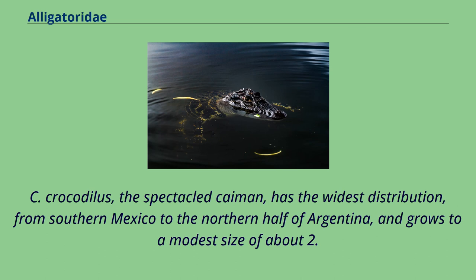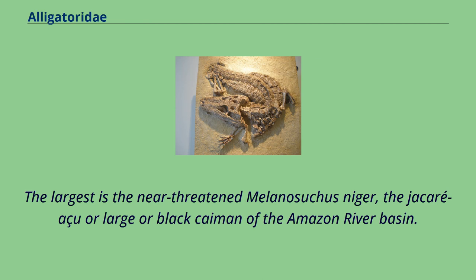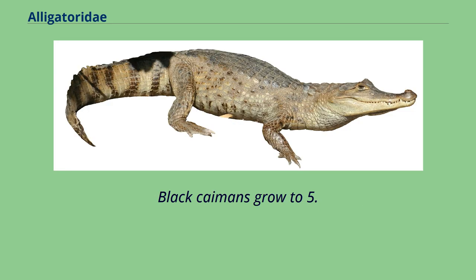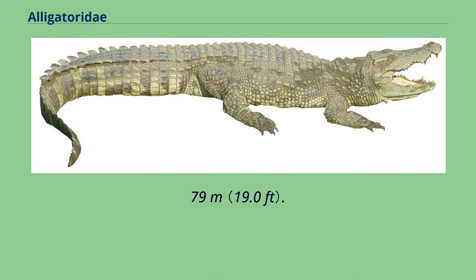The spectacled caiman has the widest distribution, from southern Mexico to the northern half of Argentina, and grows to a modest size of about 2.2 meters. The largest is the near-threatened Melanosuchus niger, the jacaré-açu or large black caiman of the Amazon River Basin. Black caimans grow to 5.0 meters, with the largest recorded size being 5.79 meters.